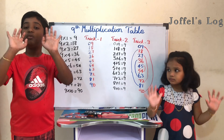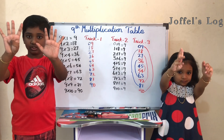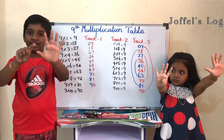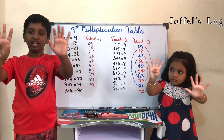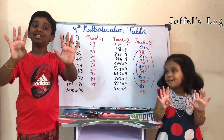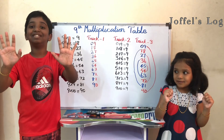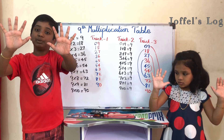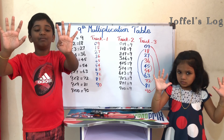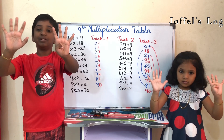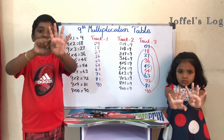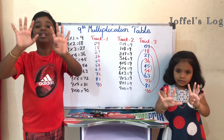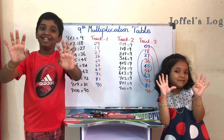Look at your fingers. Take the number six finger and bend it down. There are five on the left side and four on the right side. The answer is fifty-four. Let's do another one. Now let's do nine times five. Take finger number five and bend it down. There are four on the left and five on the right. The answer is forty-five.